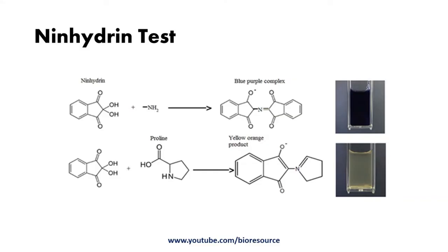Proteins also contain free amino groups on the alpha carbon and can react with ninhydrin to produce a blue-purple product. This is why the reaction with ninhydrin is used for both quantitative analysis of amino acids and detection of free amino groups in proteins, as well as qualitative detection or quantitative measurement like peptide sequencing.